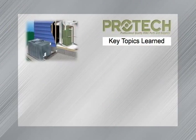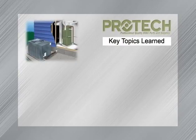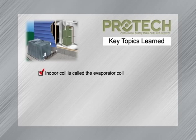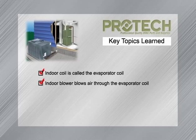Let's review the key topics we just learned in our film. We learned that split system air conditioners consist of an outdoor unit and an indoor unit. The indoor unit absorbs heat and has a special coil called an evaporator coil — the evaporator coil is the heat absorber. There is a fan that blows air across the evaporator coil.